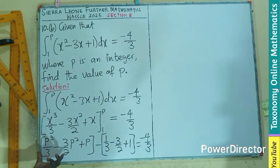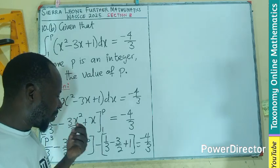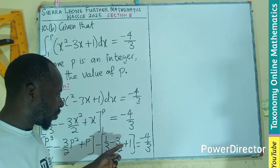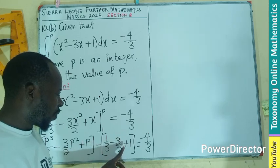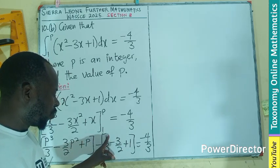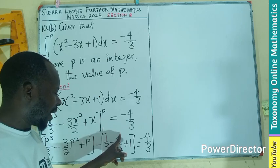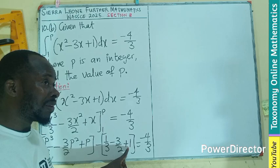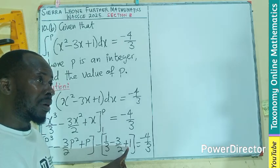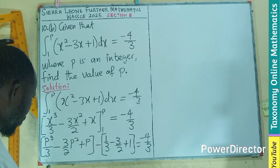So what do we do? For the first bracket, we can't do much, so we maintain it. For the second bracket, we can still find the LCM. This will be 6 over 6, 9 over 6, 2 over 6. So 2 minus 9 plus 6, that's minus 1 over 6.